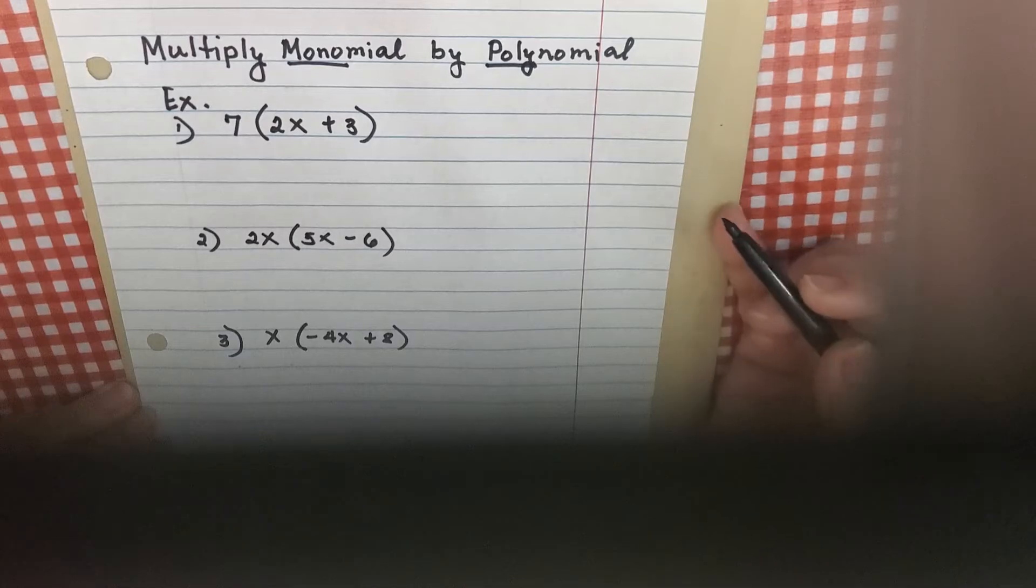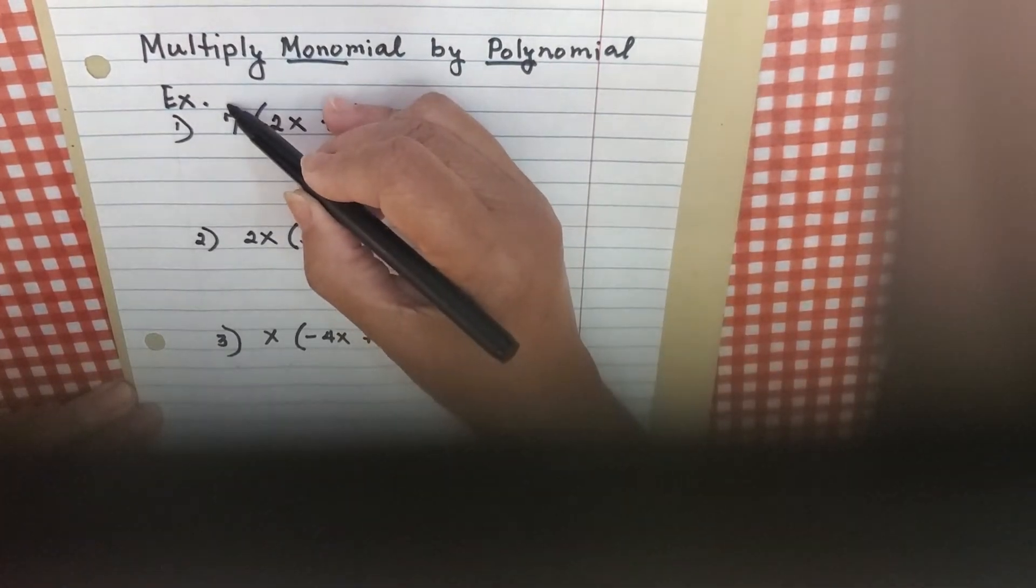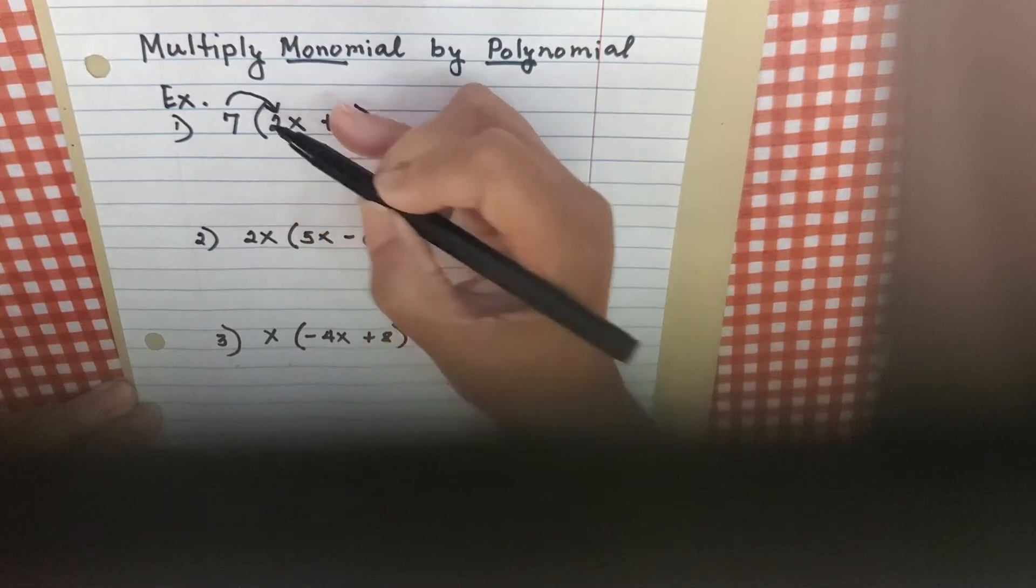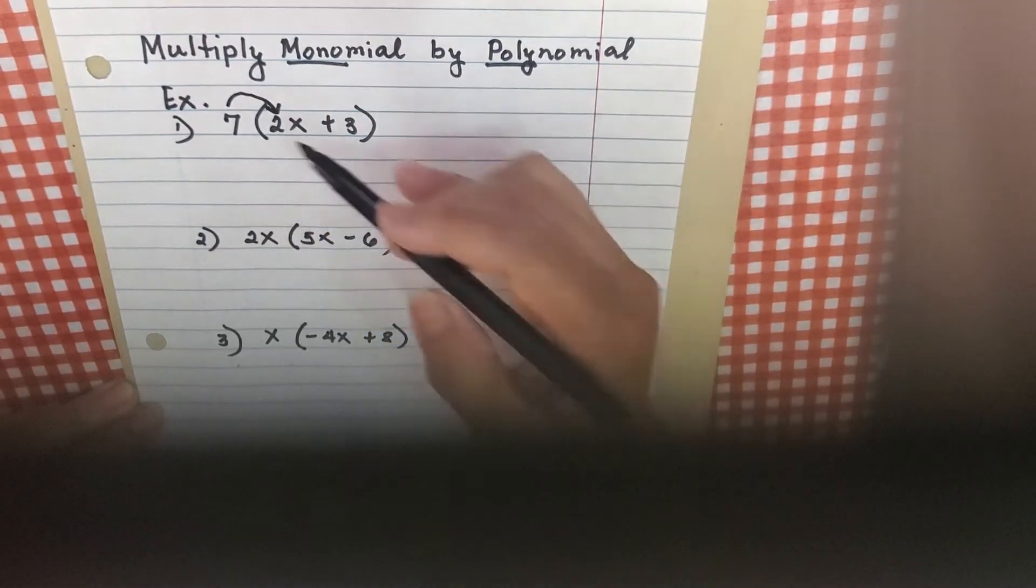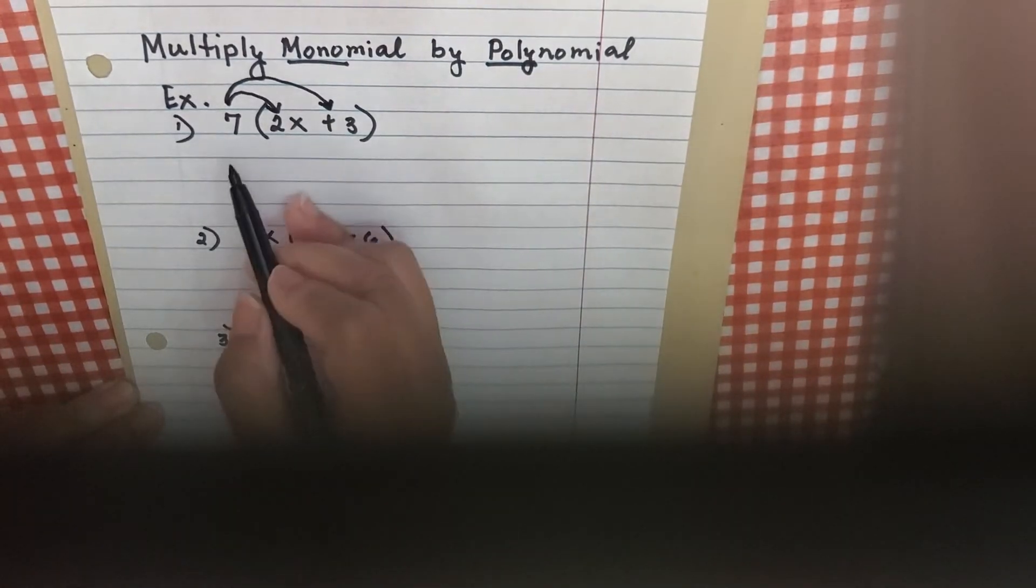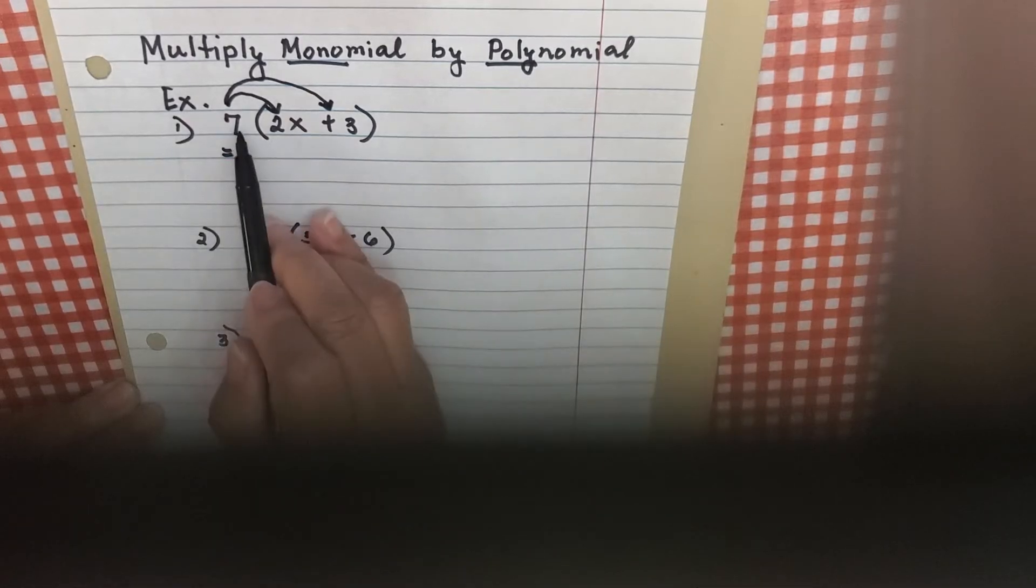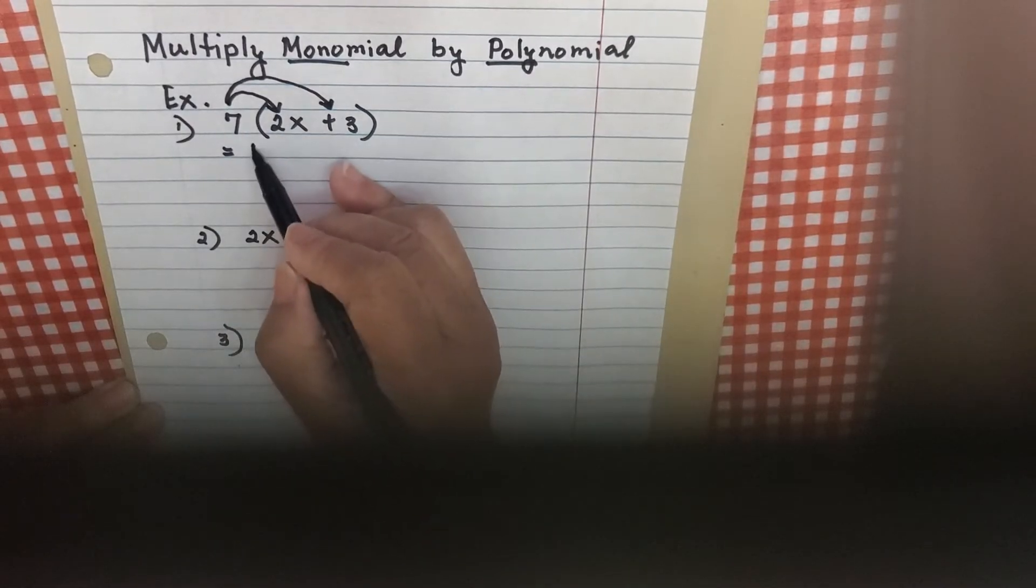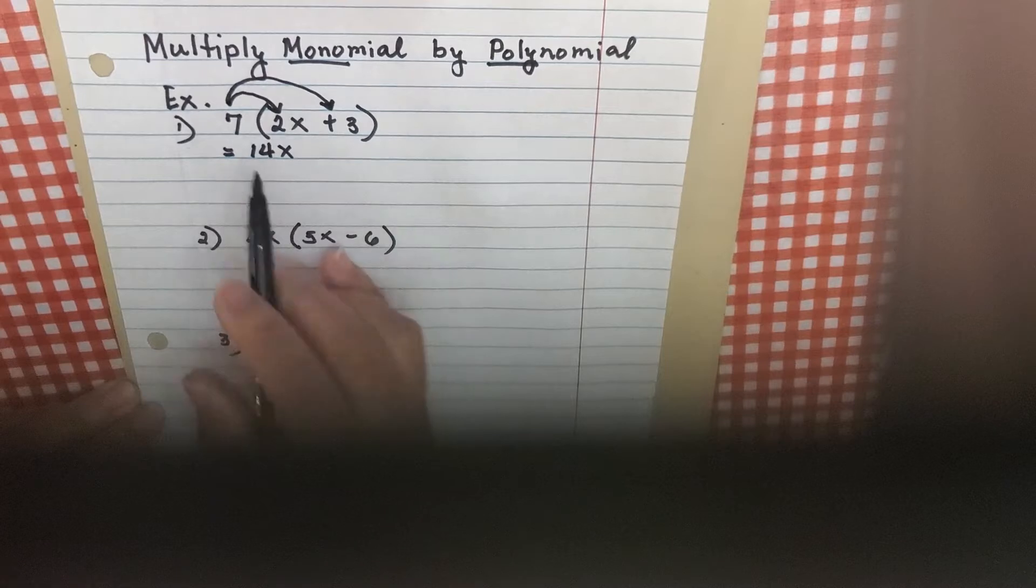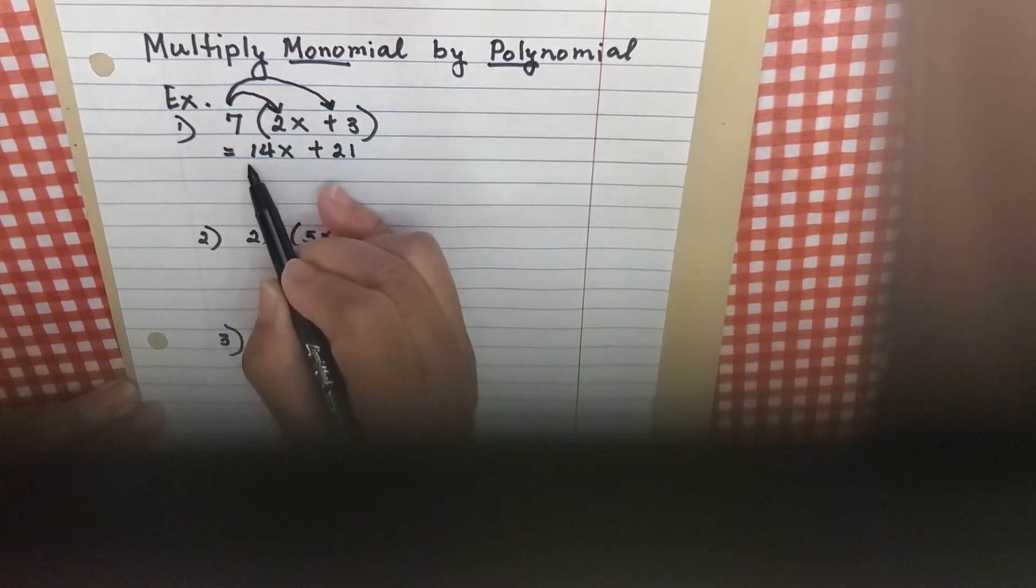The method that we're going to use is distribution. So I'm going to distribute 7 to 2x and then 7 to 3. Whenever you distribute, you multiply. So that will be 7 times 2x is 14x. 7 times 3 is 21. And that's your answer.